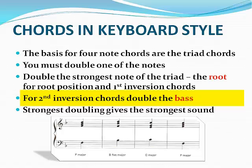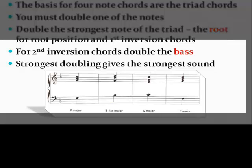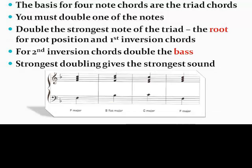Just like triads, we can name the chords by the letter name and by the quality. Here we have F major, B flat major, C major, and F major chords. All of these chords are found in the key of F major. In addition to using the letter name and quality, we can also give them Roman numerals. Roman numerals are always used to identify chords, with major chords identified with capital Roman numerals and minor chords with lowercase Roman numerals. We find the Roman numerals by determining the root of the chord, then counting from the tonic of that key.